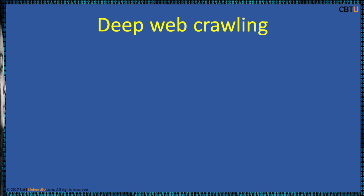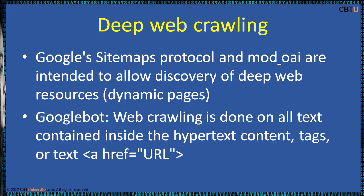Deep web crawling: Google Sitemaps protocol and other methods are intended to allow the discovery of deep web resources, i.e., dynamic pages. Googlebot web crawling is done on all text contained inside hypertext content tags and href links.